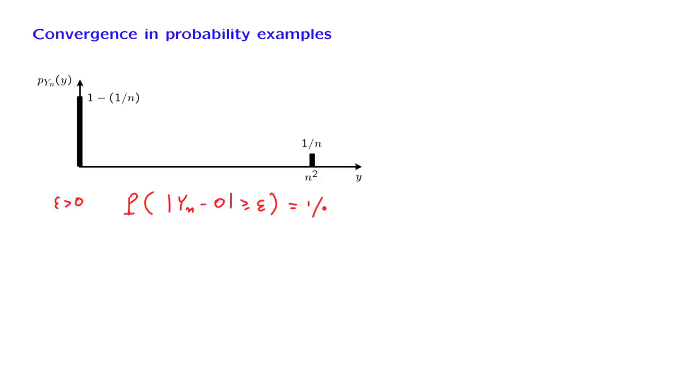it is equal to 1 over n, which goes to zero as n goes to infinity. And this verifies that, indeed, in this example, Yn converges to zero as n goes to infinity in probability.